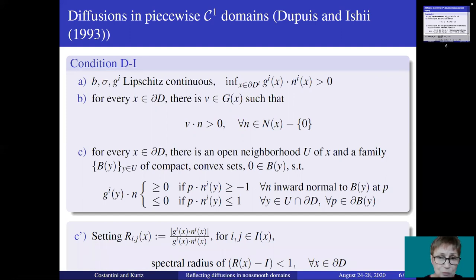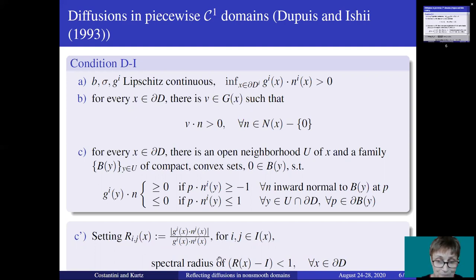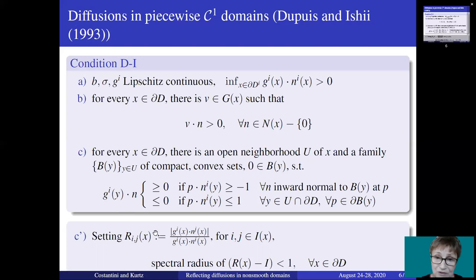However, there is a sufficient condition. At every point x on the boundary we can define a matrix R(x). This matrix R(x) contains the information about the angles between each direction of reflection at x and each normal direction at x. If the spectral radius of R(x) minus the identity is strictly less than 1 at every point on the boundary, then condition C will be satisfied. Condition C prime actually goes back to 1981 and it appeared first in a paper by Harrison and Reiner. Condition C prime is easy to verify but it is somewhat restrictive. In fact, even without replacing condition C by condition C prime, the Dupuis and Ishii conditions are not optimal. In particular, if we consider a polyhedron they do not reduce to the conditions of Dai and Williams.